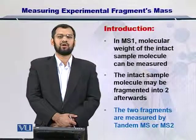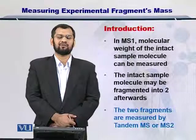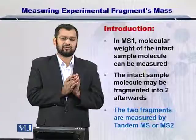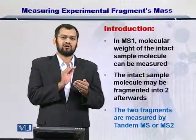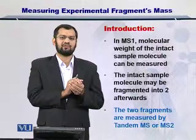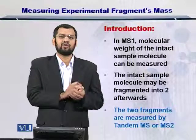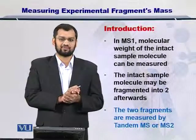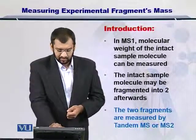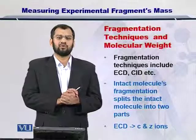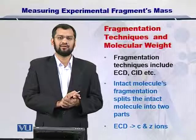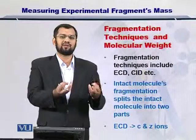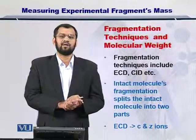This process is called MS2 or tandem MS. Once you have the molecule — the protein — in the chamber, you try to fragment it inside a mass spectrometer, and therefore it will give you two fragments resulting from the fragmentation process. The molecular weight of these two fragments can then be measured, and you will have two molecular weights or two peaks in the mass spectrum.